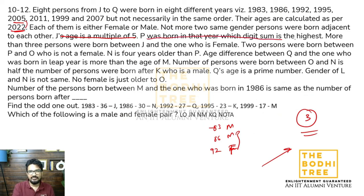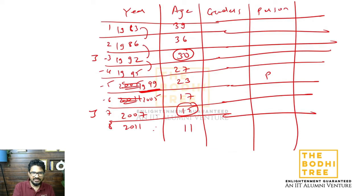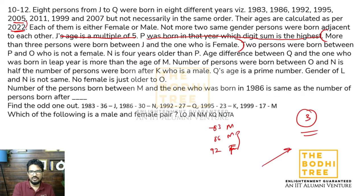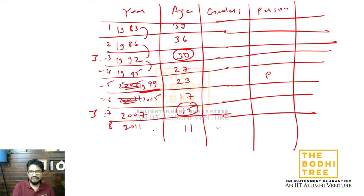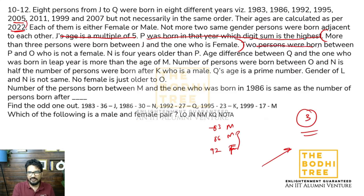J and the one who is female ke beech mein more than 3 persons hain. J yahan par ho sakta hai toh 1, 2, 3 - more than 3 toh yahan female aani chahiye. 2 persons were born between P and O who is not a female. P yahan par hai - possibilities dekh lete hain. Permutation bana raha hoon - kyunki P and O ke beech mein 2 log hain, 2 hi possibilities hain.